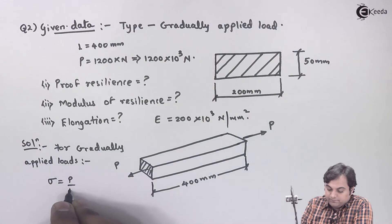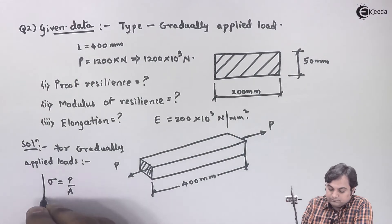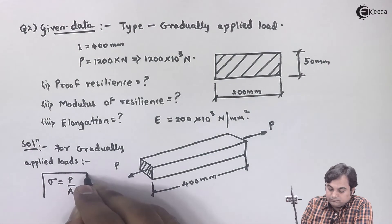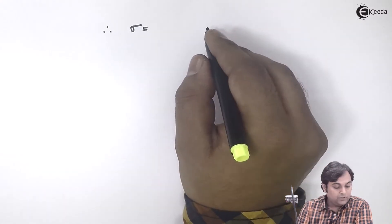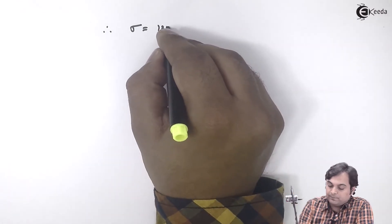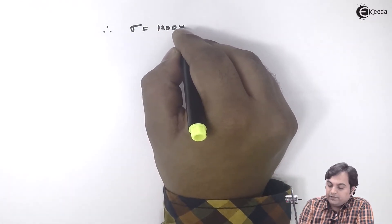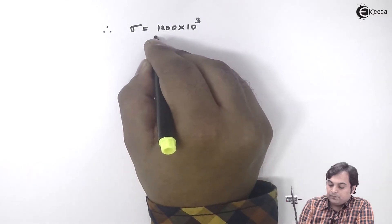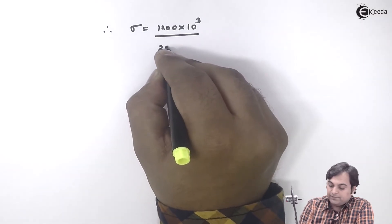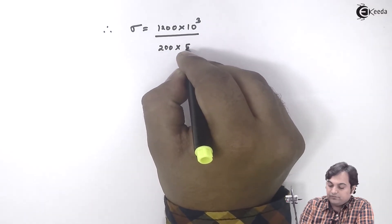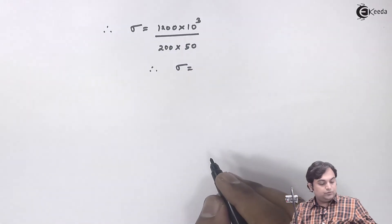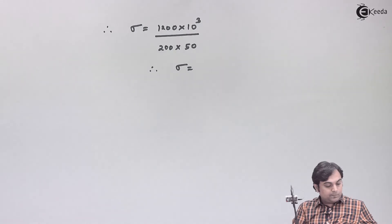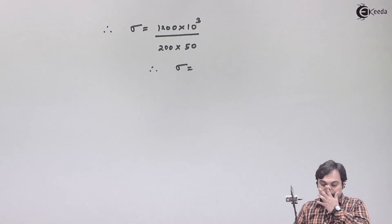For gradually applied loads, stress is equal to load upon area. Therefore stress equals 1200 × 10³ divided by the area, which is 200 × 50. From this, the stress value comes out to be 120 Newton per mm square.